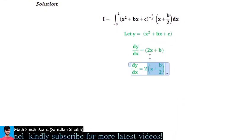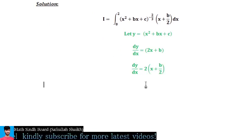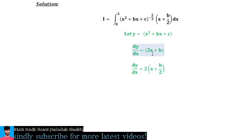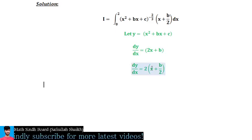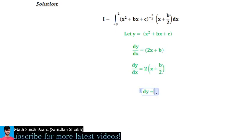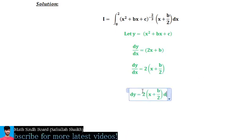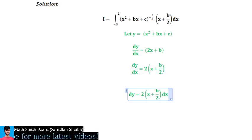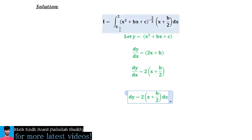We can simplify further: dy equals 2·(x + b/2)·dx, because factoring out 2 gives 2x, and 2·(b/2) equals b — the 2's cancel out. So dy = 2·(x + b/2)·dx.